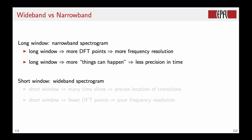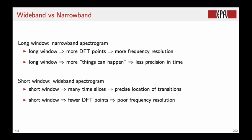Conversely, if we choose a short window, then we have a wideband spectrogram. A short window will create many time slices because you will divide the whole support of the signal into more chunks. And so we have a much more precise location of the transitions. But a short window will give us fewer DFT points and so the frequency resolution will be poor.